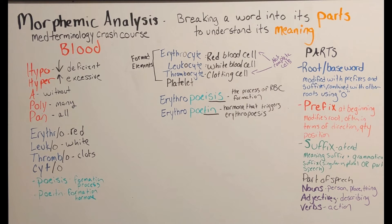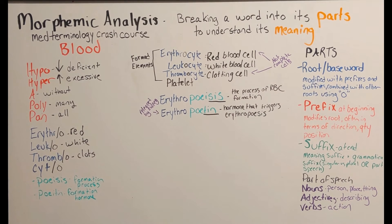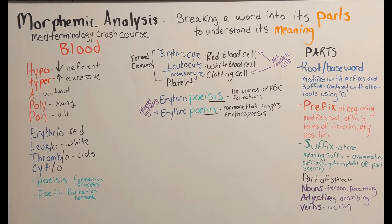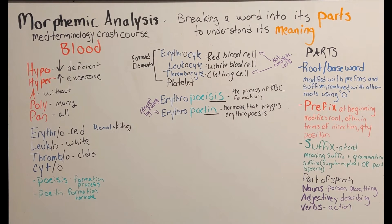As a side note: what organ releases erythropoietin? The kidney releases erythropoietin. A word that means related to the kidney is renal. It's super important you know that because it's going to come up over and over again.